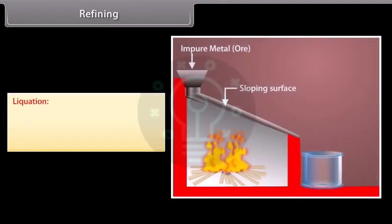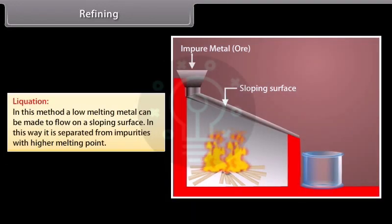Liquidation: In this method, a low melting metal can be made to flow on a sloping surface. In this way, it is separated from impurities with higher melting point, for example, tin.